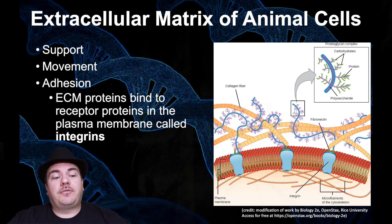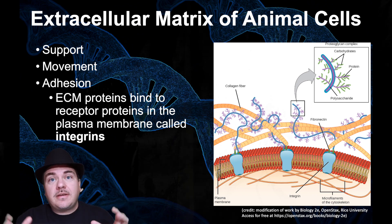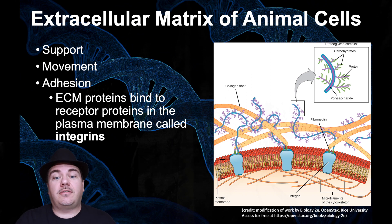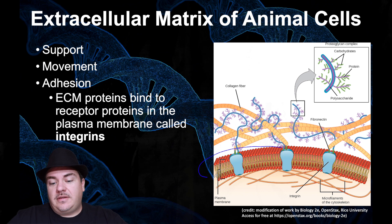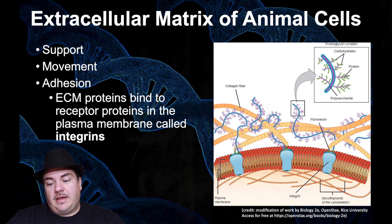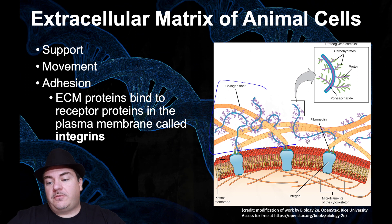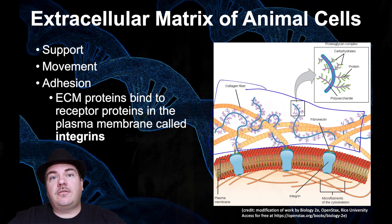What is the purpose of the extracellular matrix for an animal cell? It helps to support the cell, helps the cell to stay where it's supposed to be, and it can also allow the cell to move if the cell needs to move. For example, this would represent the plasma membrane of an animal cell. This would be outside the animal cell; this would be inside the animal cell. Inside, that's where you find things like the cytoskeleton. Outside, that's where you find the extracellular matrix made out of things like collagen fibers.